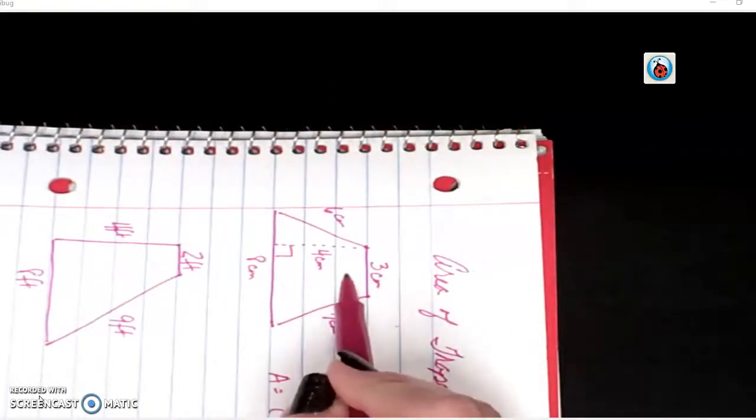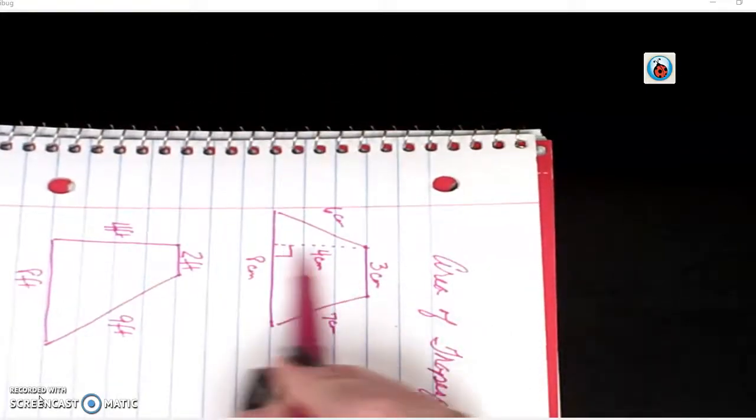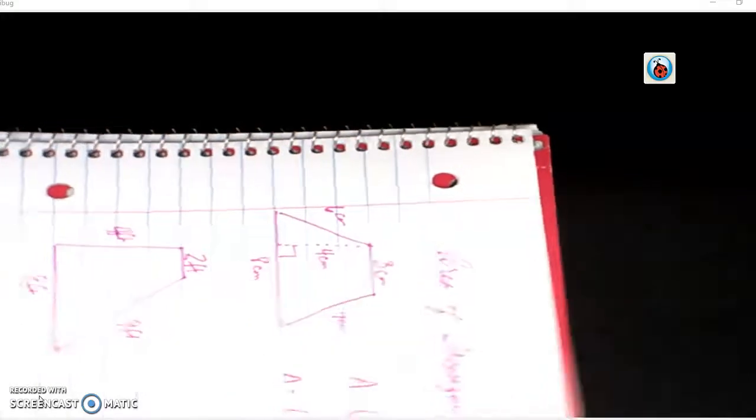So if this was turned on its side, these are your parallel sides, they're your bases. How far apart are the bases? That's going to be your height.